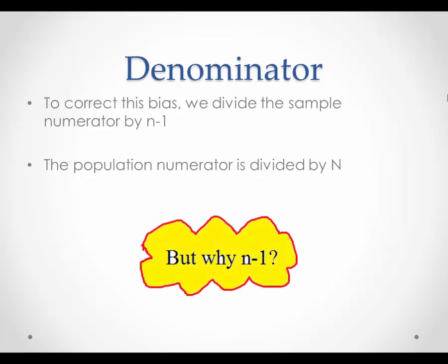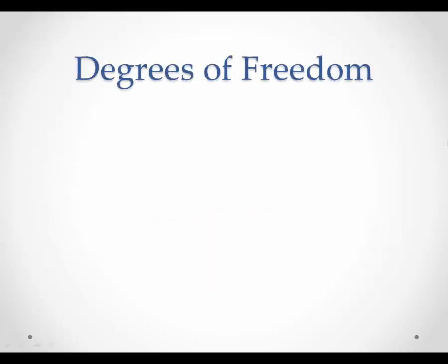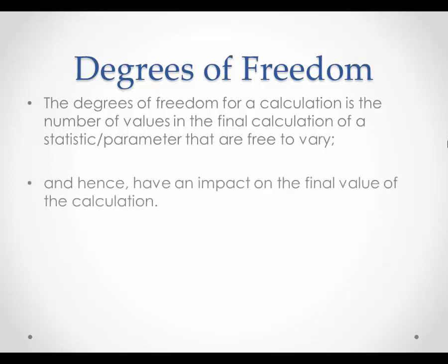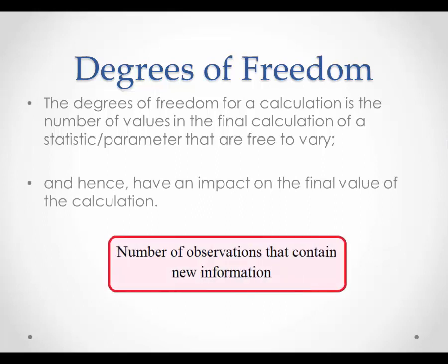But why n minus 1? Where does this value come from? We now have to talk about degrees of freedom. The degrees of freedom for a calculation is the number of values in the final calculation of a statistic or parameter that are free to vary, and hence have an impact on the final value of the calculation. In short, it is the number of observations that contain new information.